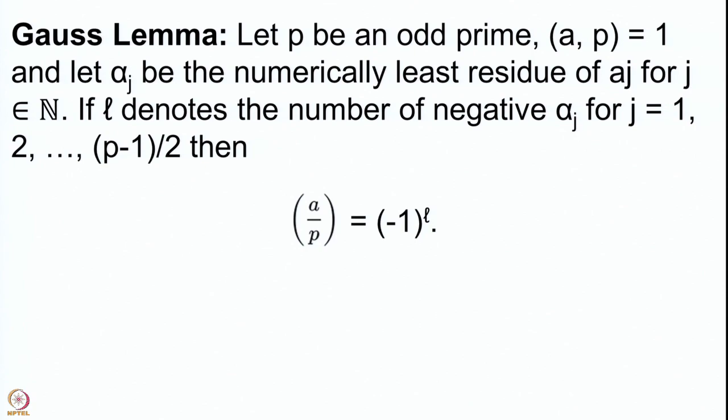We compute all these numerically least residues and see how many of these are negative. Remember the numerically least residues for a prime p are the residues from -p/2 to p/2. Among these, we are looking at how many of the multiples of a starting from a up to a·(p-1)/2 have negative numerically least residues. If that number is l, then Gauss Lemma says that the Legendre symbol (a/p) is (-1)^l.